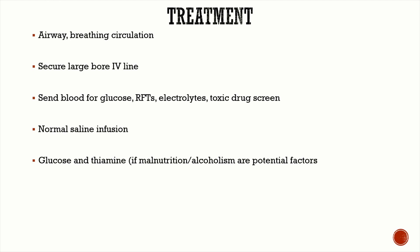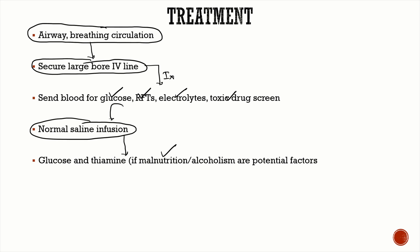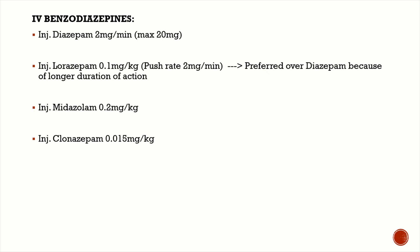To treat status epilepticus, first do ABC — airway, breathing, circulation. After stabilizing, secure a large-bore IV line and send investigations: blood glucose, renal function test, serum electrolytes, and a toxic drug panel. Start the patient on IV fluids, ideally normal saline. If you're suspecting malnutrition or alcoholism as contributing factors, add glucose along with thiamine — never give glucose alone, always add thiamine.